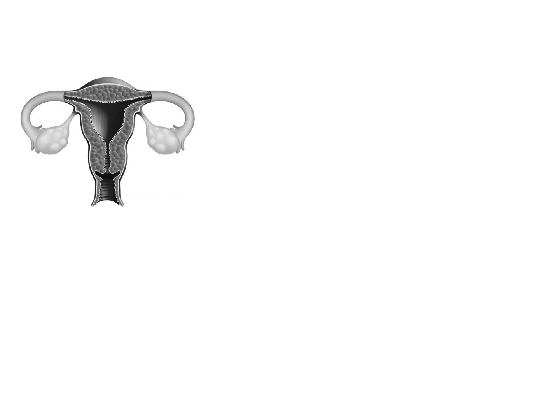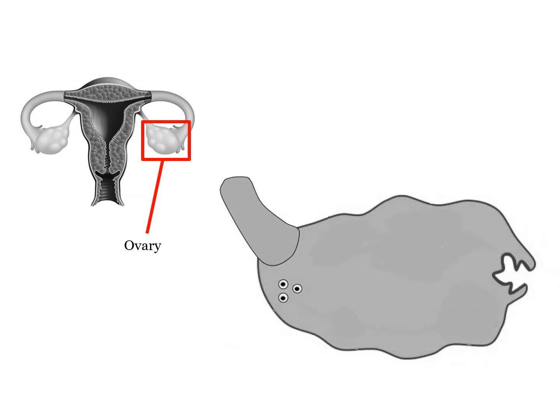Oogenesis occurs in the outermost layer of the ovaries. It all started with the development of the primordial follicle in the fetal ovary. Compared with spermatogenesis, which is only stimulated when a human male reaches sexual maturity, oogenesis in the human female starts much earlier.